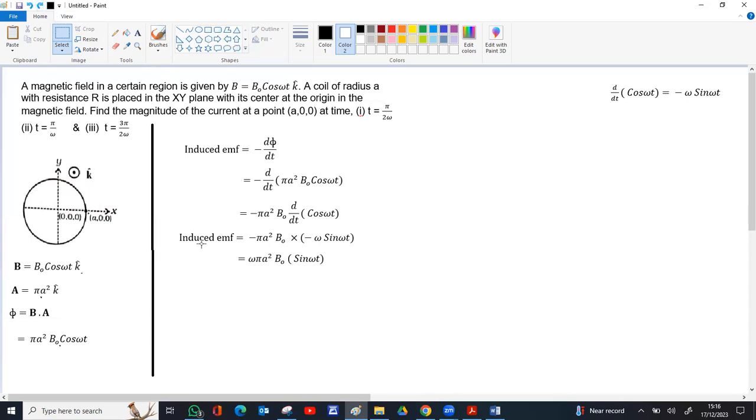Now induced current will be induced emf by resistance. So just divide by R. So ωπA² B₀ by R into sin ωt. Now this is the expression for the induced current. As you change the time value, you get different values for the induced current.